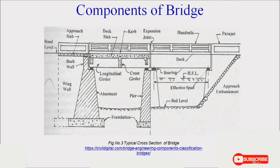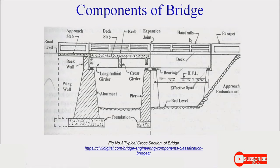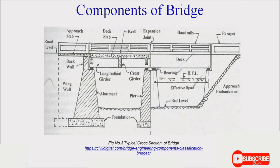Longitudinal girders are provided throughout the span, and cross girders are provided throughout the width of the bridge. The width of the bridge is the width of the road pavement constructed over the bridge. Handrails and parapet walls are provided for safety. Expansion joints are constructed to avoid expansion or contraction of the material used in the construction of the deck slab. The deck slab is made of concrete consisting of cement, sand, and aggregate, which have properties like shrinkage and expansion due to changes in weather conditions, so expansion joints reduce the stresses due to temperature effects.